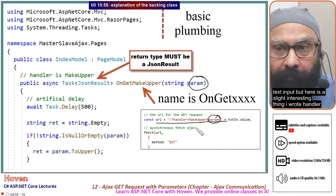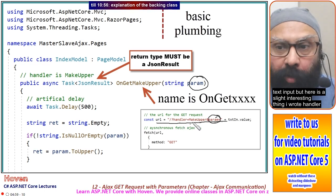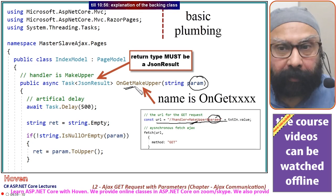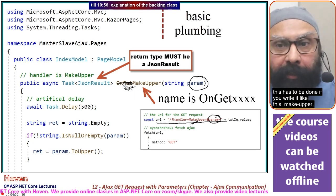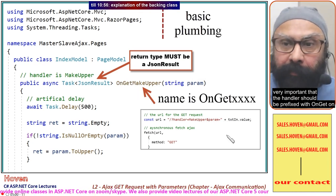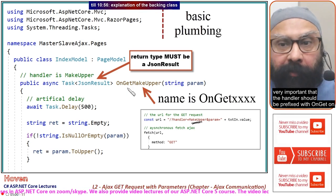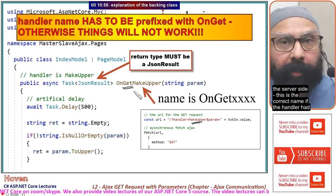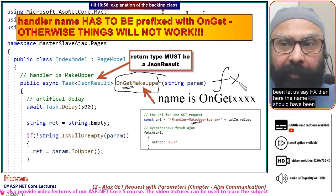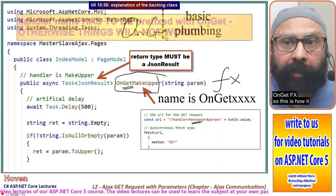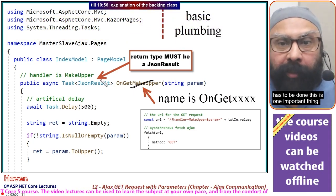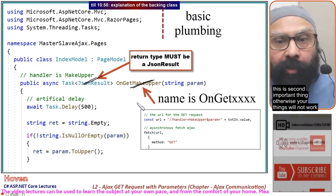Here's a slight interesting thing. I wrote handler as makeupper, but here my name is prefixed with OnGet. This has to be done. If you write it like makeupper without OnGet, this will not receive the request. It's very important that the handler should be prefixed with OnGet on the server side. If the handler had been fx, the name should have been OnGetFx.